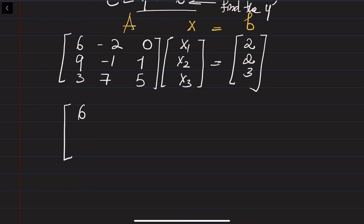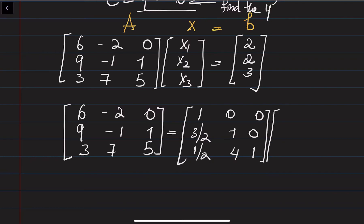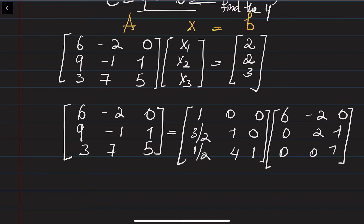We want to substitute A as its LU decomposition. The L matrix is: row 1 [1, 0, 0], row 2 [3/2, 1, 0], row 3 [1/2, 4, 1]. The U matrix is: row 1 [6, -2, 0], row 2 [0, 2, 1], row 3 [0, 0, 1]. So matrix A can be written as L times U.